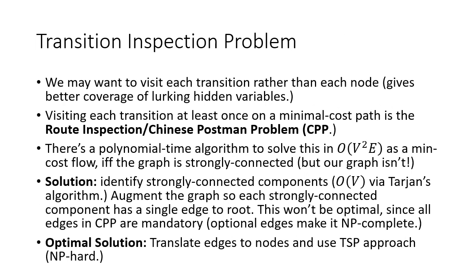For transition inspection, we have a slightly different problem: we want to visit each transition rather than each node. Visiting each transition at least once on a minimal cost path is known as the Chinese Postman Problem, or route inspection problem. There's a polynomial time algorithm to solve this in O(V² × E) as min-cost flow, if and only if the graph is strongly connected. Unfortunately, our graphs aren't strongly connected, so we'd have to augment them. The solution is to identify strongly connected components in linear time with Tarjan's algorithm, then augment the graph so each strongly connected component has a single edge to root. Having optional edges turns it into an NP-complete problem, but this does make it feasible for CPP to work.